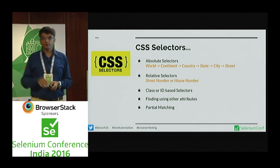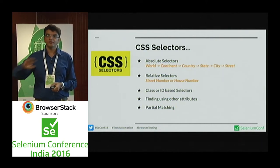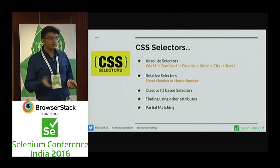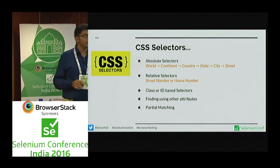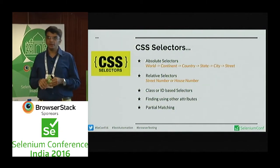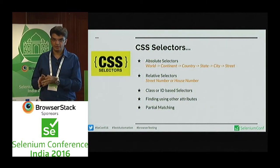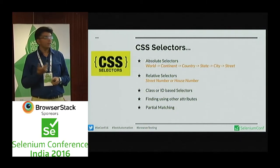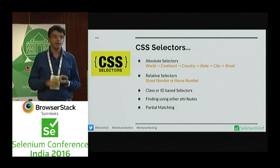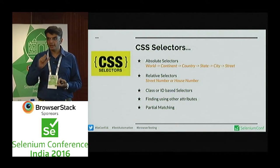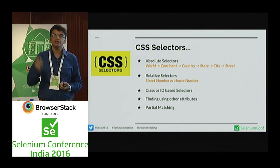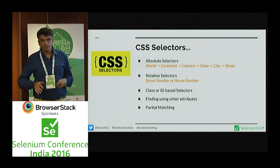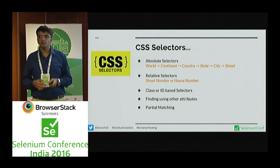Relative selectors directly go to that specific element — like the White House in Washington; everyone knows the address, no need for the full geographic location. Relative selectors are class or ID-based, or finding selectors using any other attribute. When HTML developers write code, it's not only class or ID — there can be several other attributes given to a web element, such as name, data elements, or data tags. Partial matching is also a way, though not the most reliable approach.